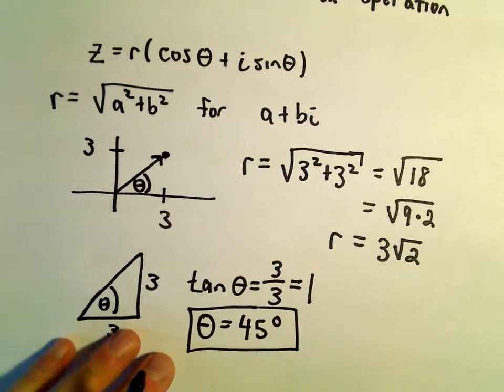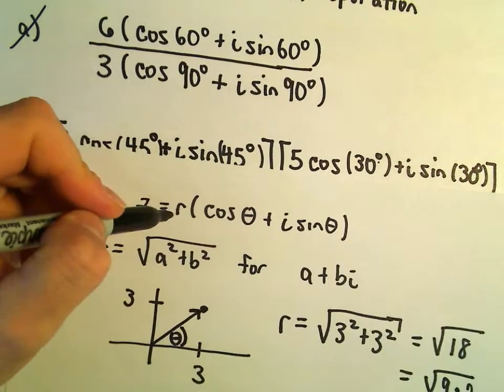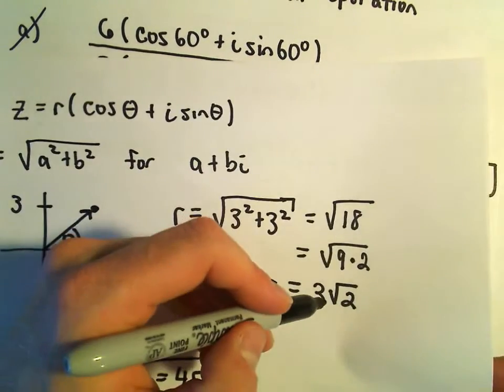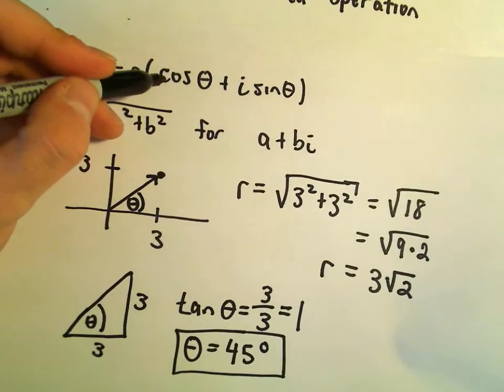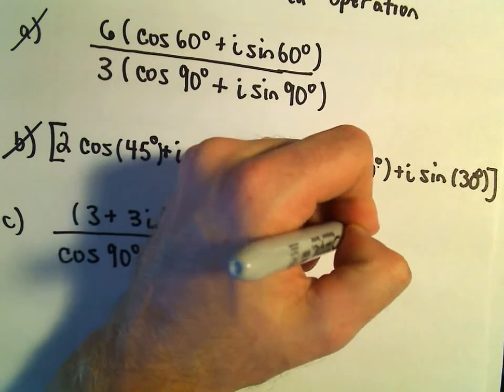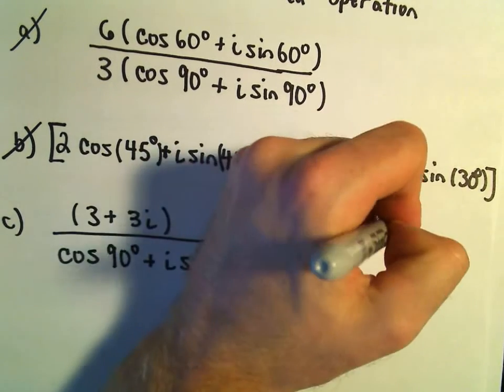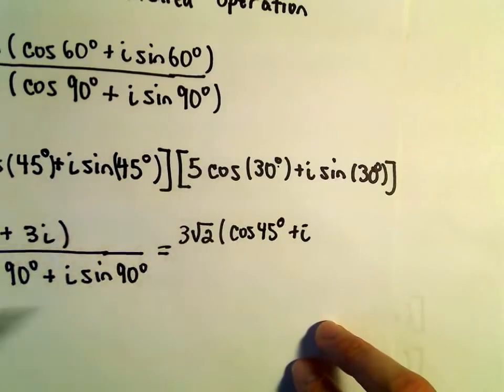So let's see, I think we can rewrite the numerator now. This would be the same thing as our r value, which we said is 3 root 2. So we would have 3 root 2 times cosine of the angle, which we said is 45 degrees. So cosine of 45 degrees plus i times sine of 45 degrees.